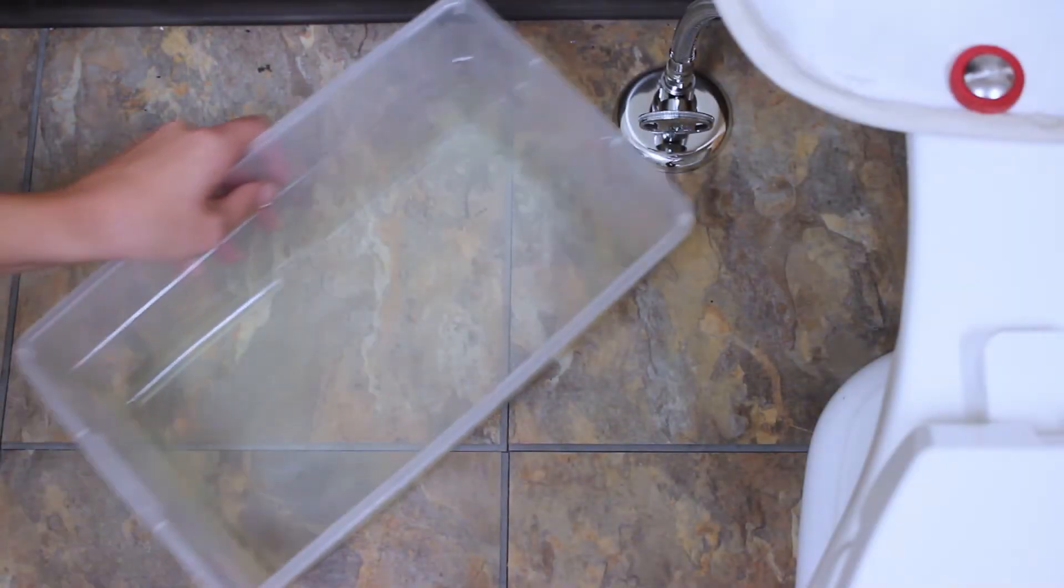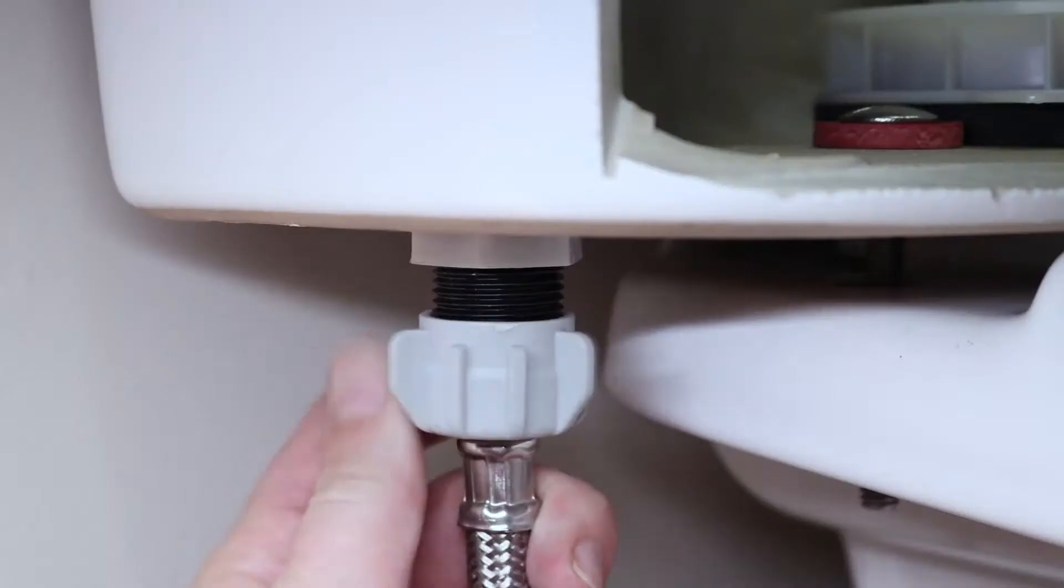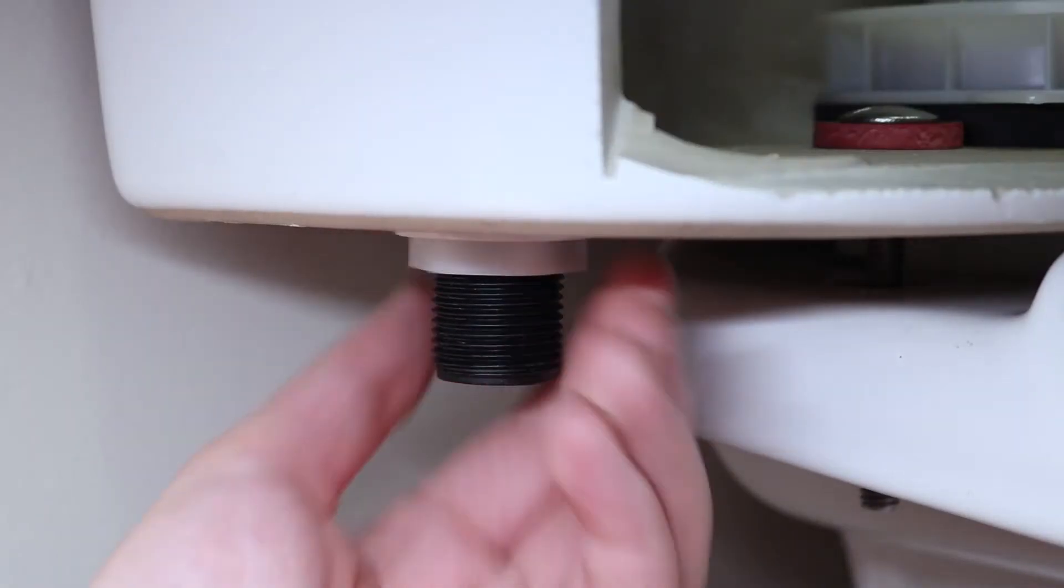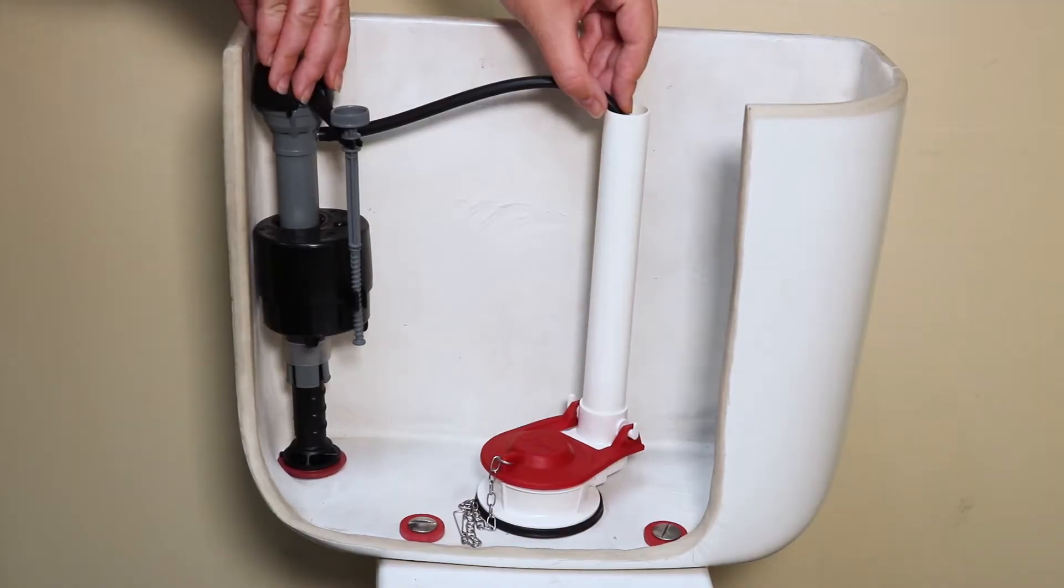Place a bucket underneath your tank to catch any excess water. Disconnect your water supply line and remove the mounting nut. Remove the old fill valve.